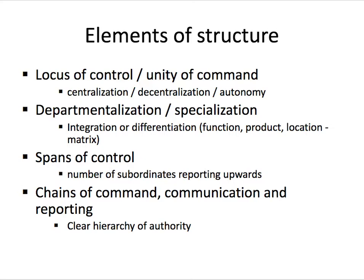Firstly, we're going to think about how is the command and control function structured — is power or control centralised to a core group of decision makers, or is it decentralised so that everybody has a degree of autonomy? Is there a single locus or multiple places that have the ability to tell people what to do? This is sometimes called the locus of control — the place of control — or the unity of command, a term developed by Charles Perrault. Next, we're going to think about the departmentalisation of organisations.